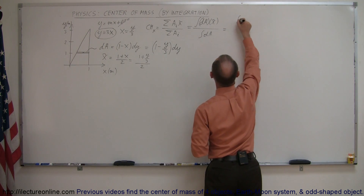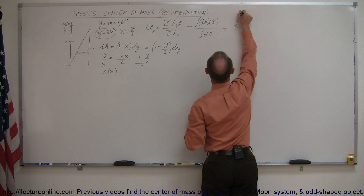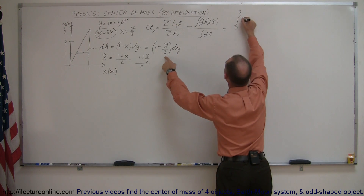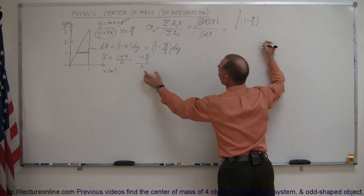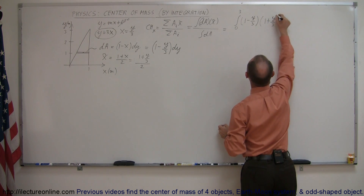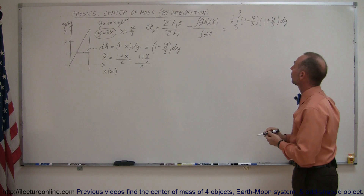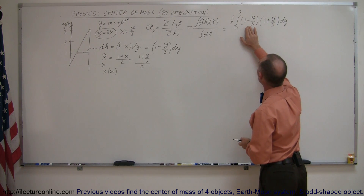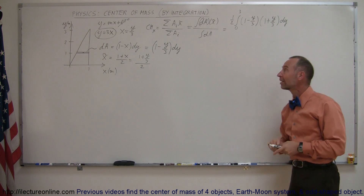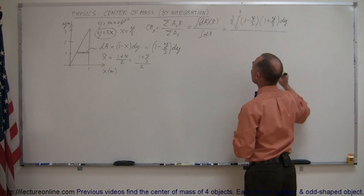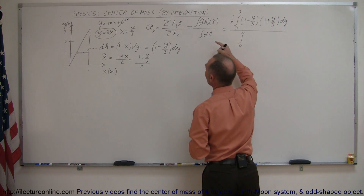This is going to be equal to the integral, and I'm going to integrate over the y variable. The y goes from 0 to 3, so from 0 to 3 of the dA — which is 1 minus y over 3 times dy — times the x-coordinate, which is 1 plus y over 3, divided by 2, and I can bring that outside the integral sign. This is my dA: 1 minus y over 3 times dy, and this divided by 2 equals my x-coordinate of the center mass for that little segment. I'm going to divide that by the integral from 0 to 3 of my dA, which is 1 minus y over 3 dy.